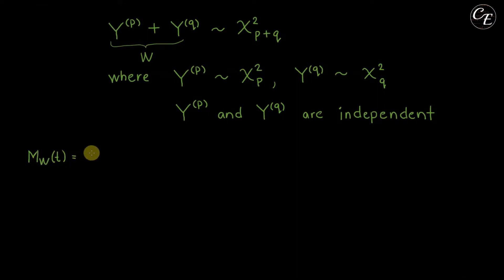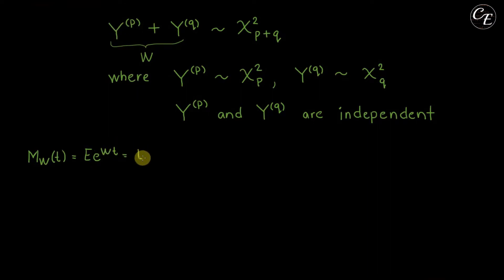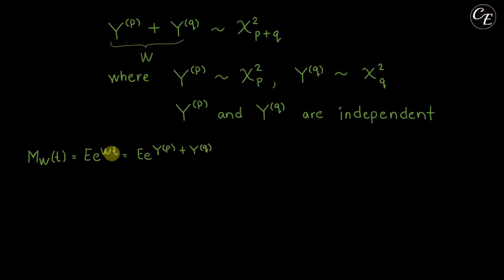So now let us determine the moment generating function for W. We know the formula — it is equal to the expectation of e raised to Wt. And then substituting W, we have the expectation of e raised to Y_p plus Y_q, times t.